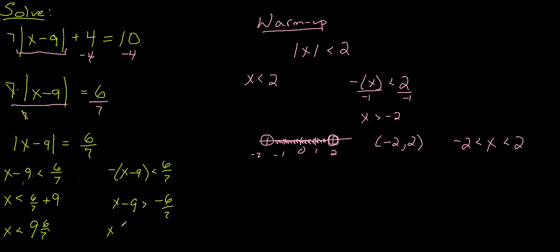And if you add 9 to that side, you're going to have 9 - 6/7, which is equal to x... -6 is greater than 8 and 1/7. So on a number line, if you were to put these values 8 and 1/7 and 9 and 6/7, your solution would live between those values.